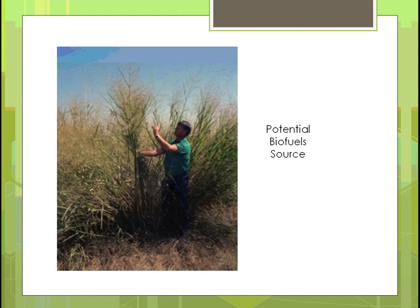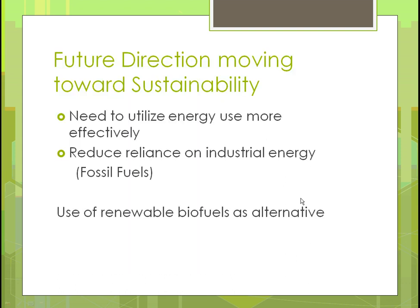Some things we can do to become more sustainable include replacing fossil fuels with biofuels. Here's an example of switchgrass — one of the things being studied as a replacement for fossil fuels. The idea is to grow a field of it and produce fuel from it.